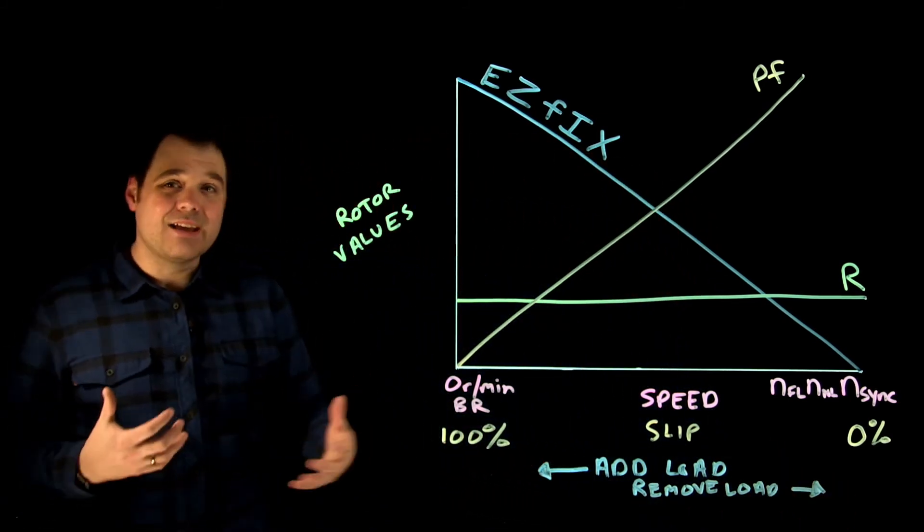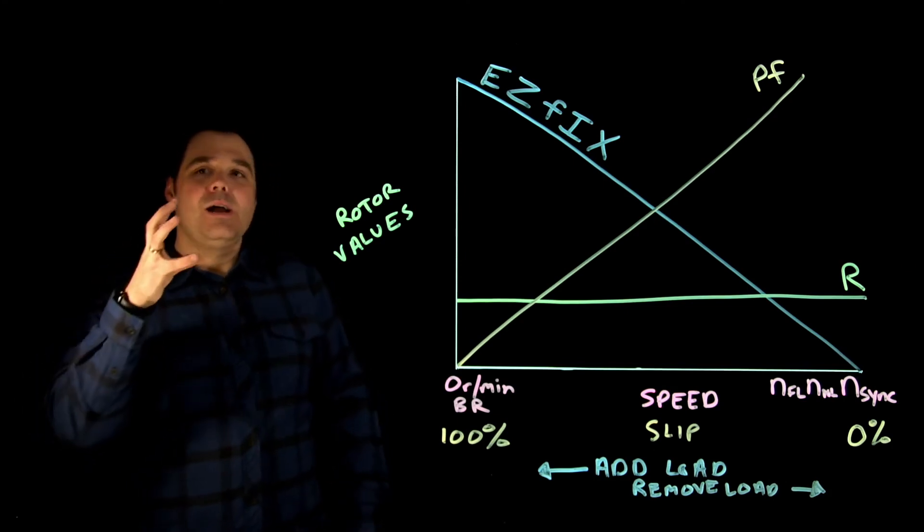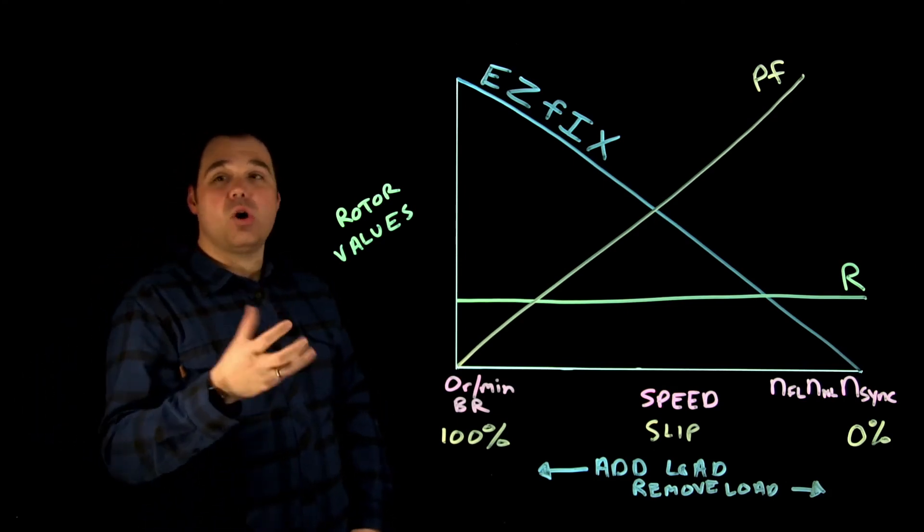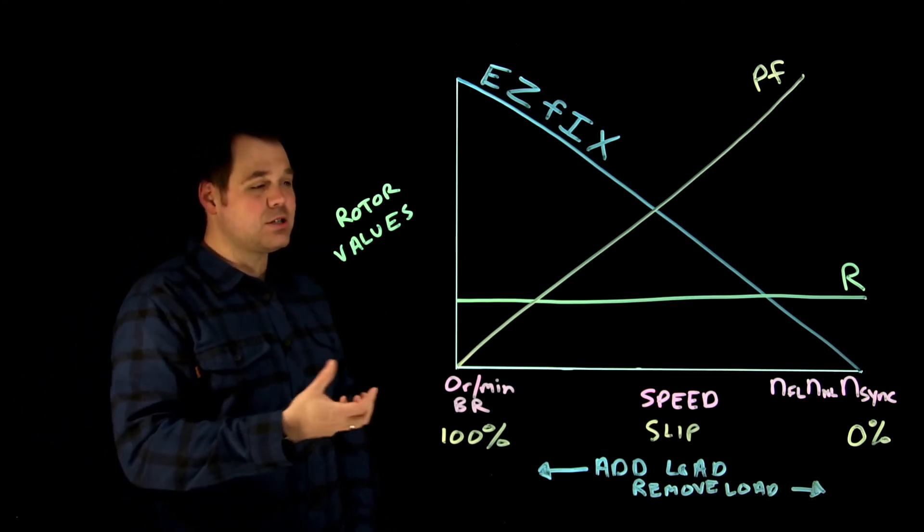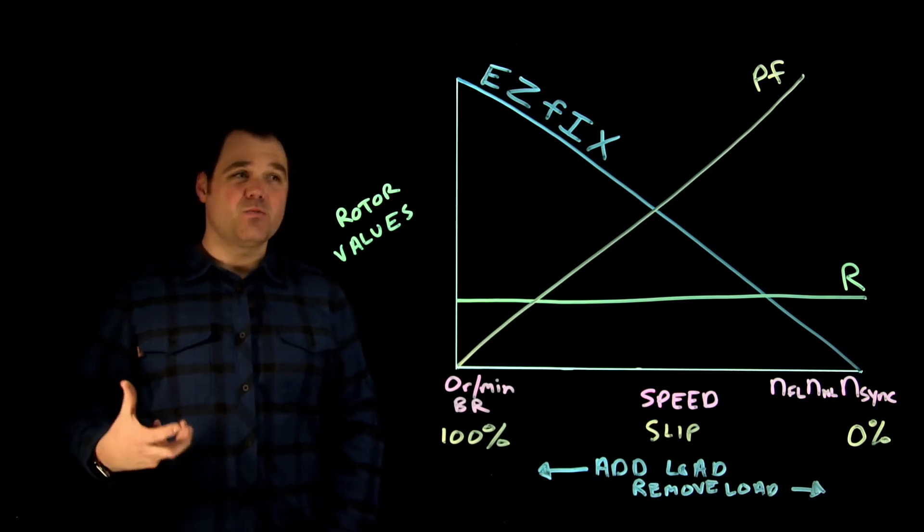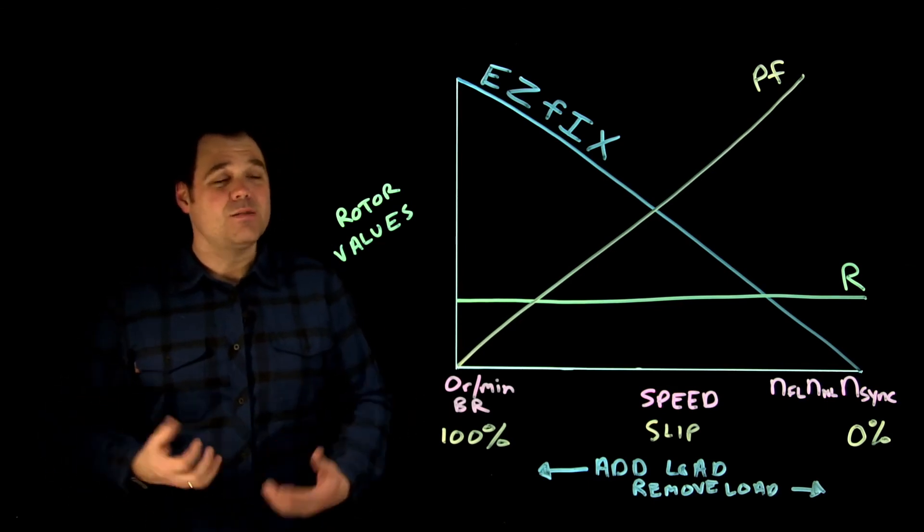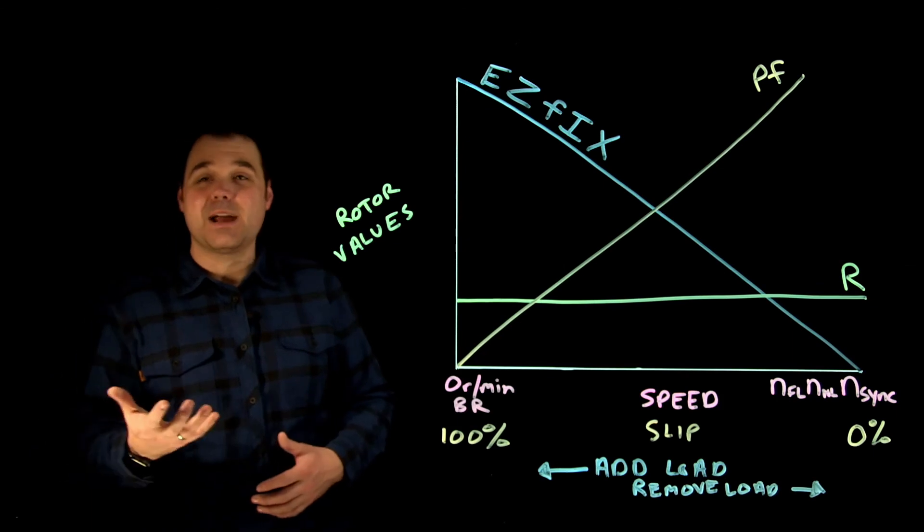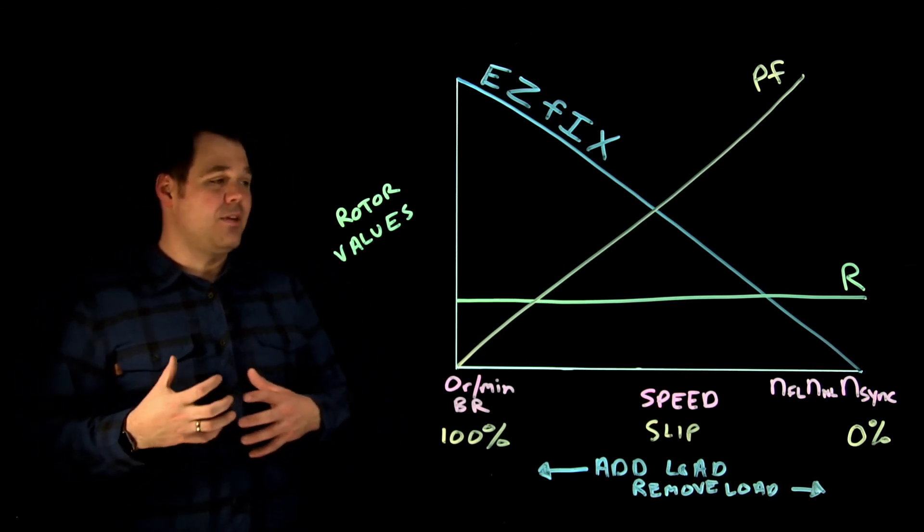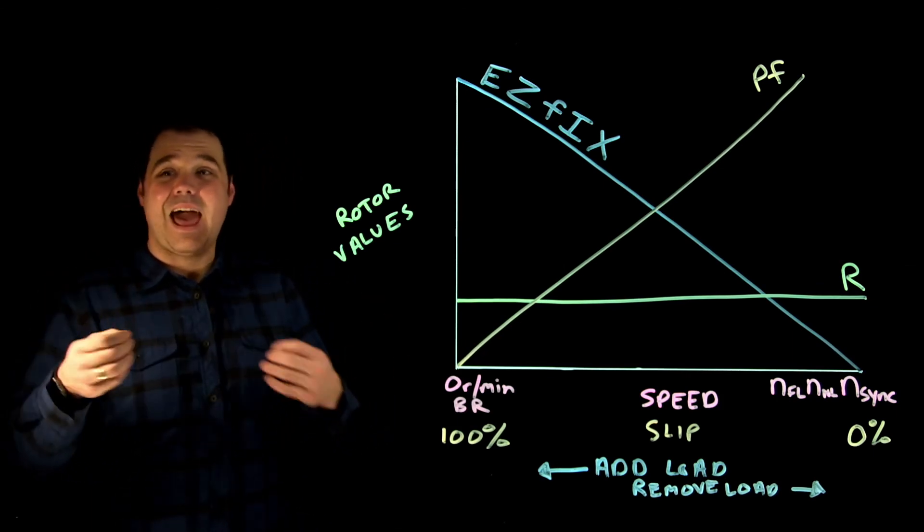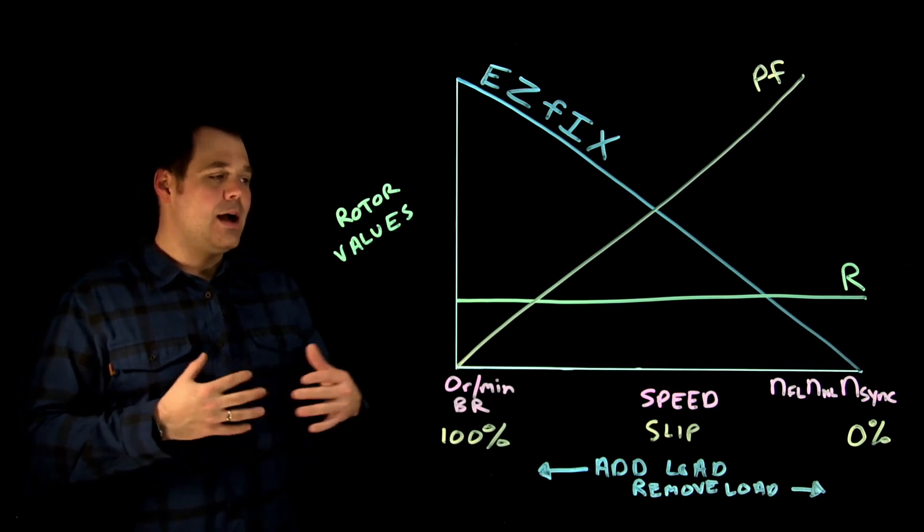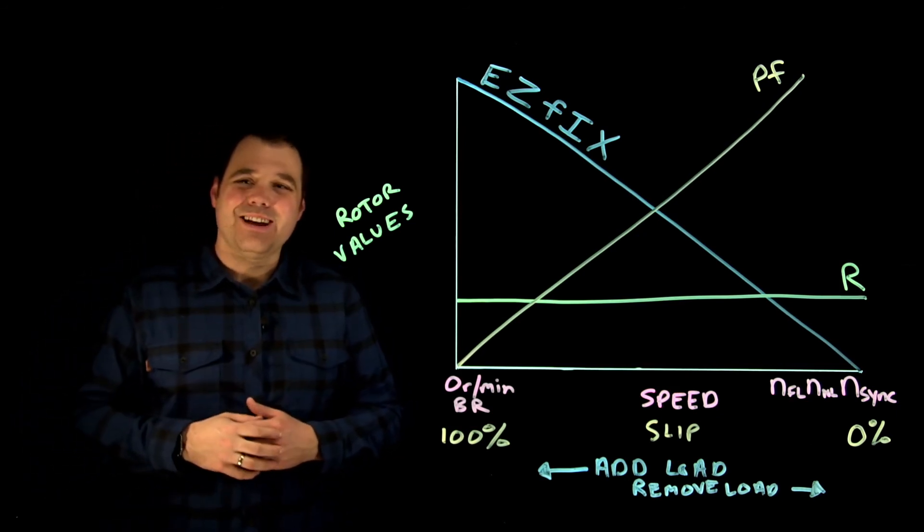Alright, so this chart, again, just a super helpful chart to get a basic overview of all of those different rotor parameters, things that are happening inside the rotor. A couple things we're not talking about here is the torque curves, like I mentioned, I've got another video for that. And that's going to directly align with the active current in the rotor. So thank you so much for watching. Have a great day.